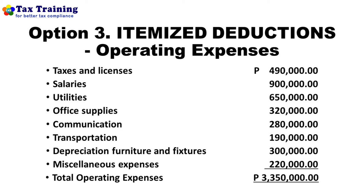I also list the itemized operating expenses common to bloggers: taxes and licenses — four hundred ninety thousand, because you want your business to be legal; salaries for admin officer and office staff — nine hundred thousand; utilities — six hundred fifty thousand; office supplies — three hundred twenty thousand; communication — two hundred eighty thousand; transportation — one hundred ninety thousand; depreciation of furniture and fixtures — three hundred thousand; miscellaneous expenses — two hundred twenty thousand. The total operating expenses in this example is three million three hundred fifty thousand.